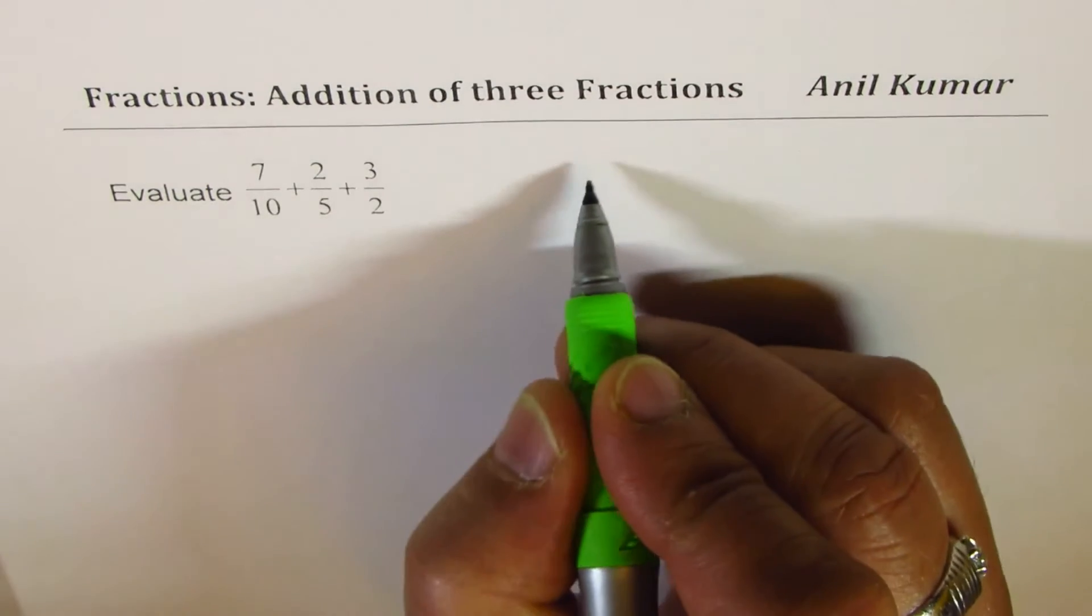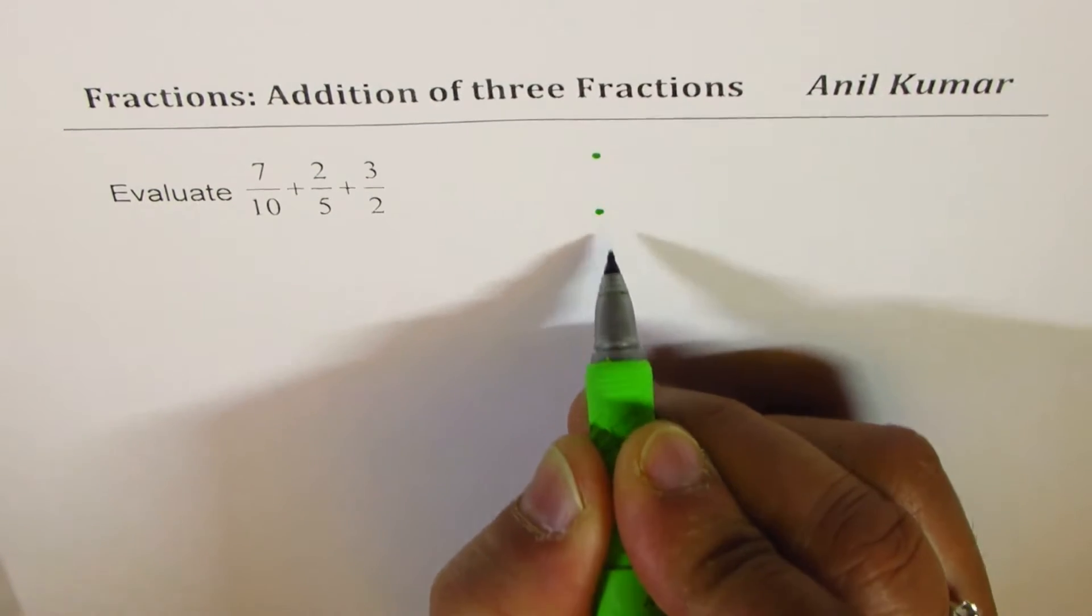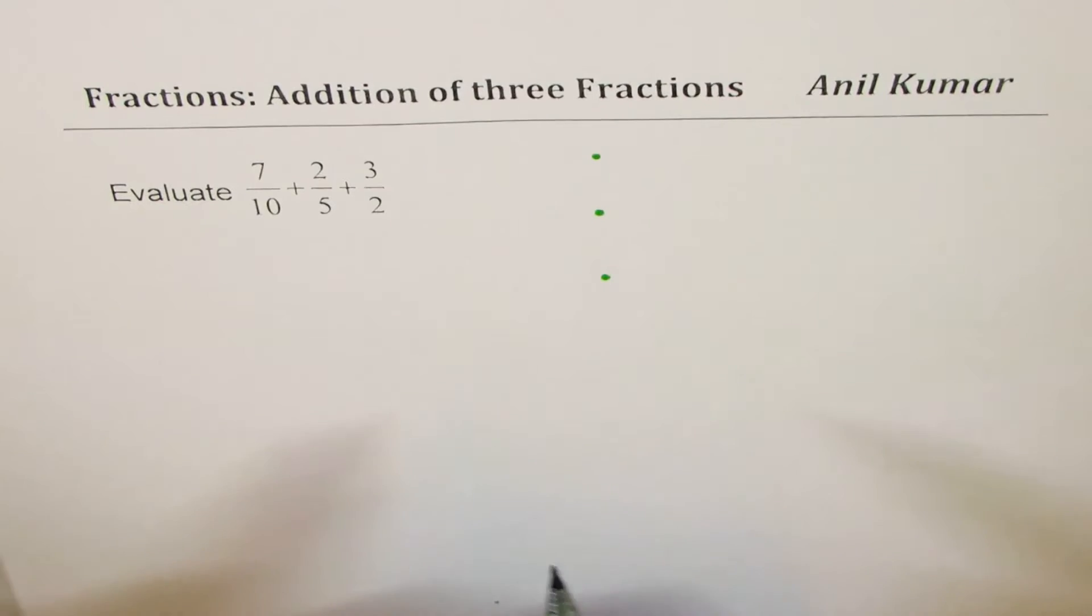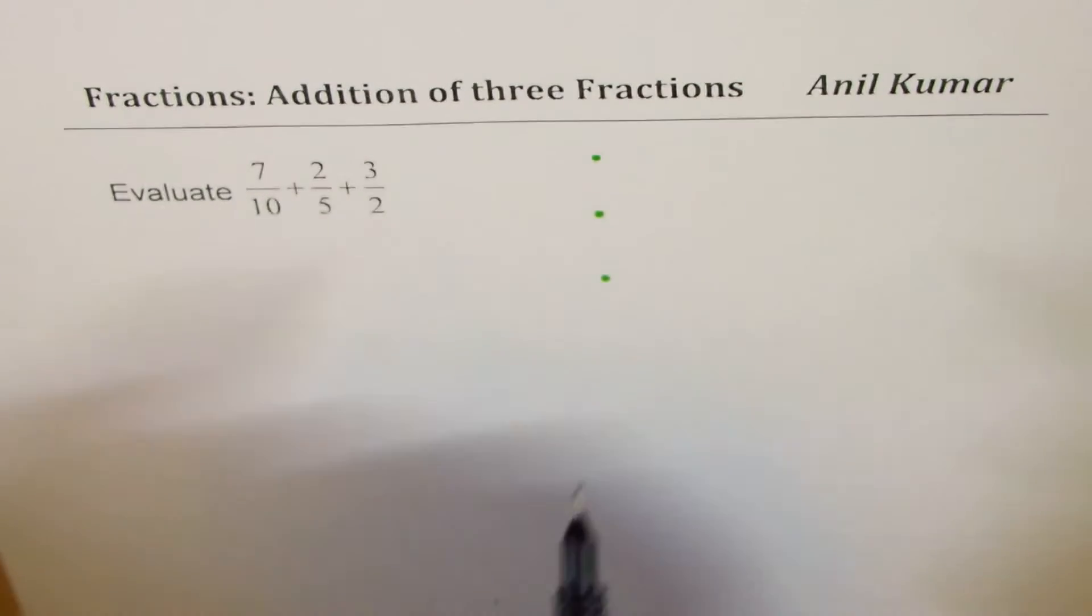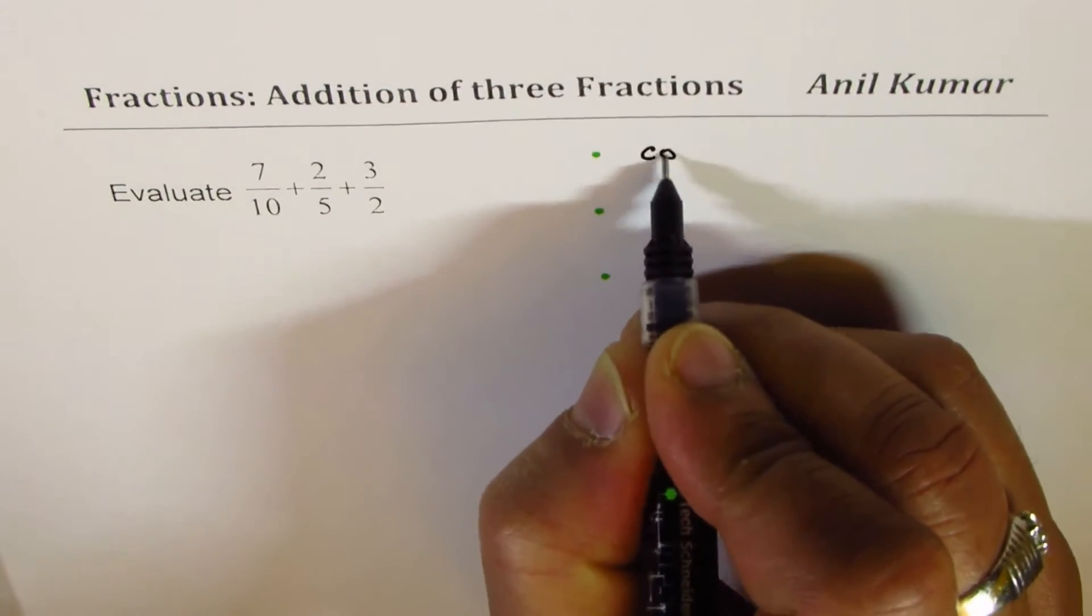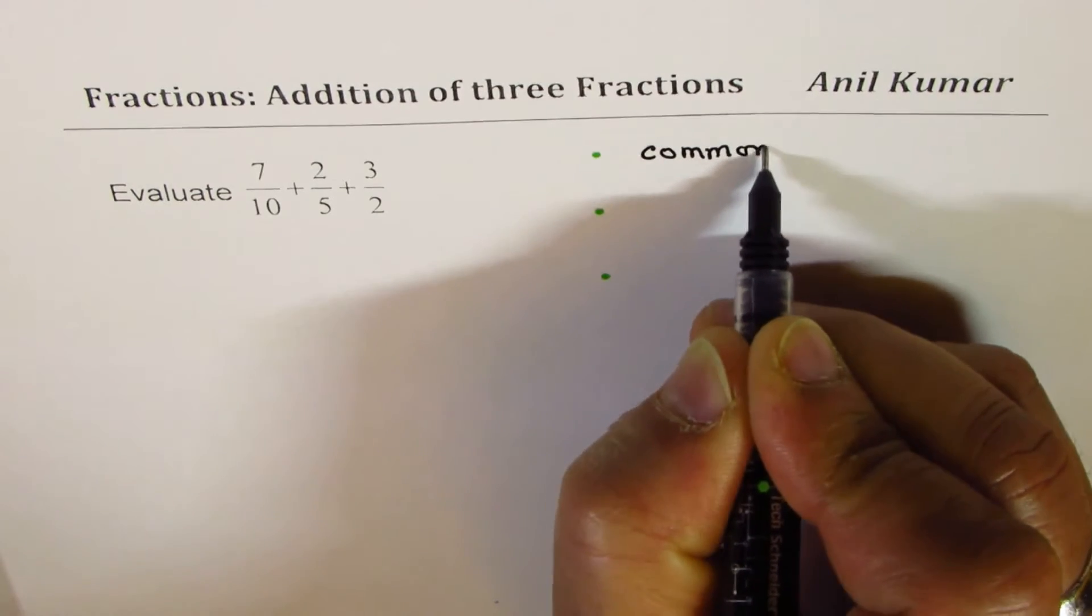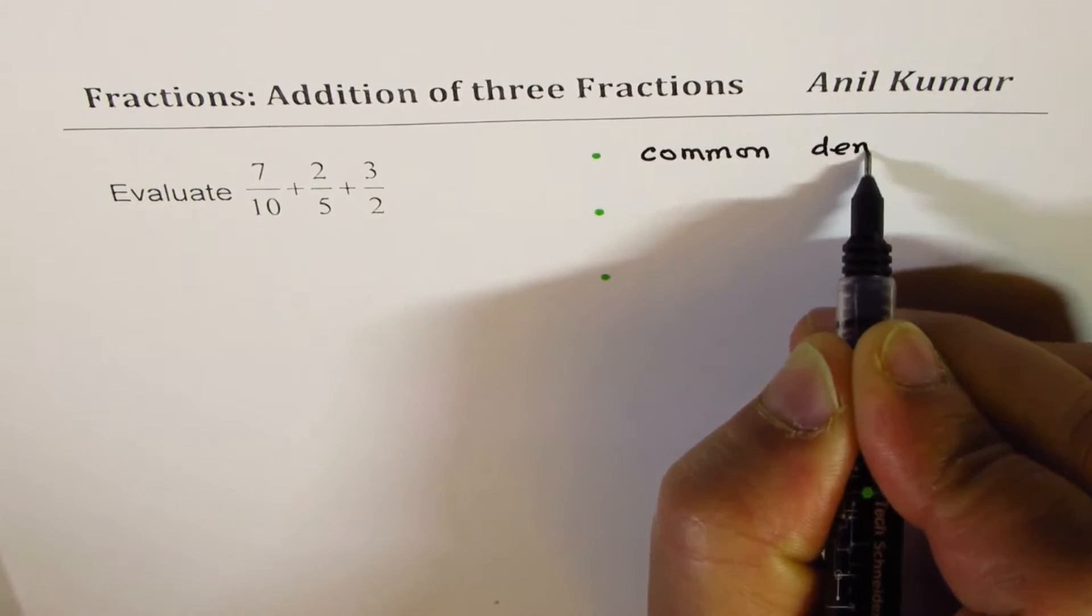I can write three major steps which one can follow to add fractions. We can only add or subtract fractions if we have common denominator, so we need to somehow get common denominator.